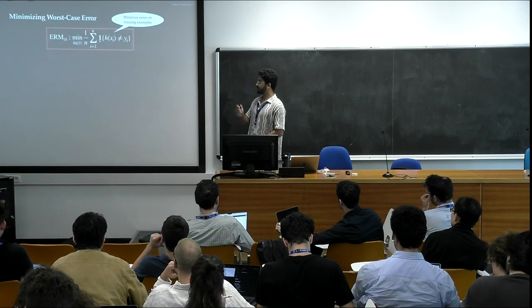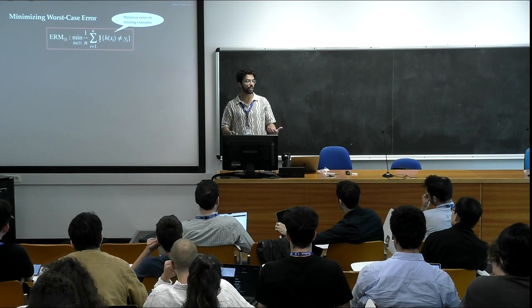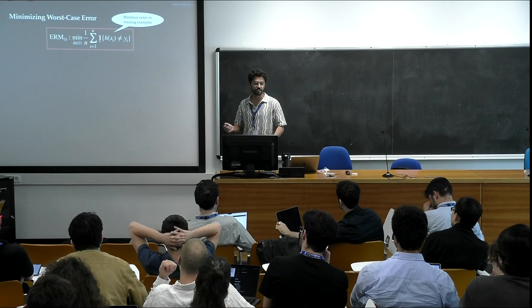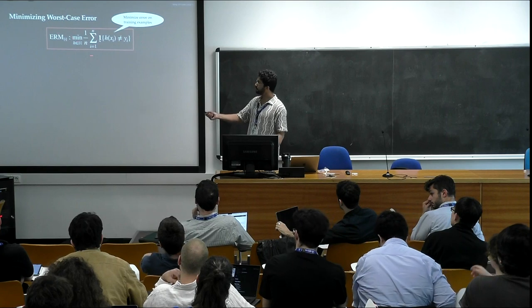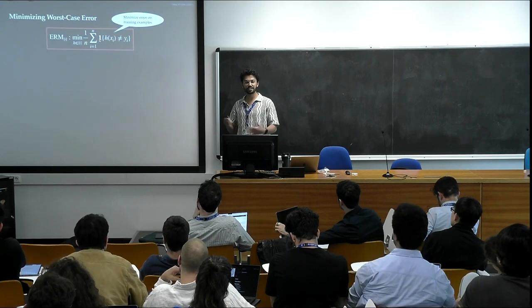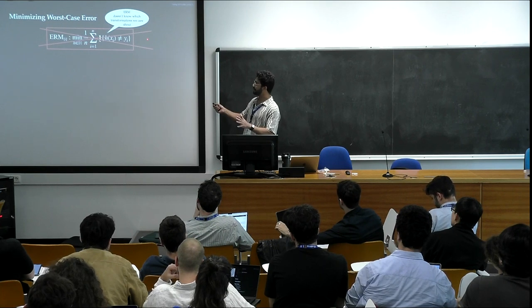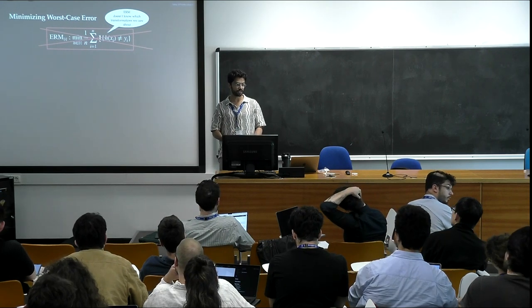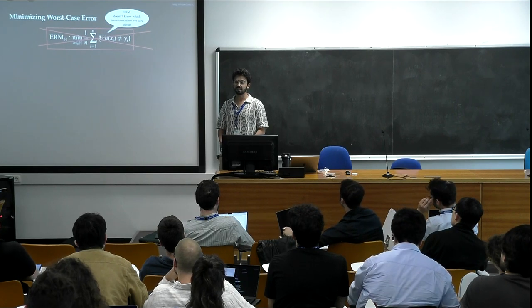With this setup in mind, let's think about ways of achieving this. A starting point would be empirical risk minimization — the standard principle in ML where we look for a predictor minimizing error on training examples. Will ERM do well on transformations? The answer is no, because we don't give it any description of the transformations we care about. In the worst case, there will always be some transformation that it messes up on.